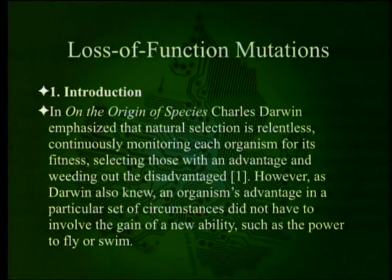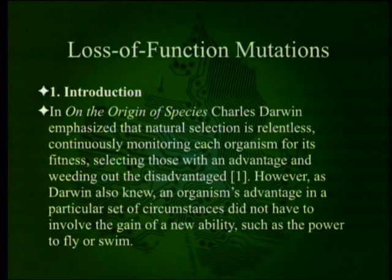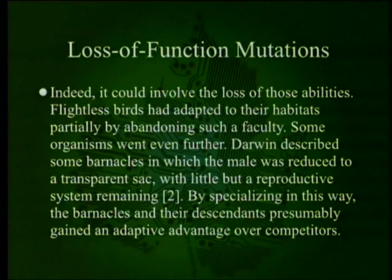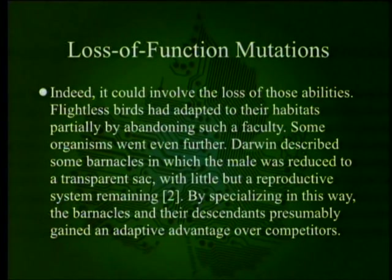In On the Origin of Species, Charles Darwin emphasized that natural selection is relentless, continuously monitoring each organism for its fitness, selecting those with an advantage and weeding out the disadvantaged. However, as Darwin also knew, an organism's advantage in a particular set of circumstances did not have to involve the gain of a new ability, such as the power to fly or swim. Indeed, it could involve the loss of those abilities. Flightless birds had adapted to their habitats partially by abandoning such a faculty. Darwin described some barnacles in which the male was reduced to a transparent sac with little but a reproductive system remaining — by specializing in this way, the barnacles presumably gained an adaptive advantage over competitors.